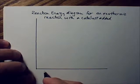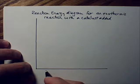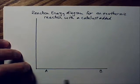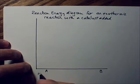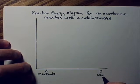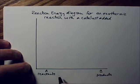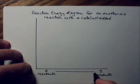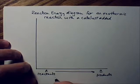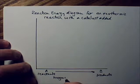We could call this side A and this side B, or this side is the reactants and this side is the products — so you go from here to here. You could also call this the progress of the reaction.